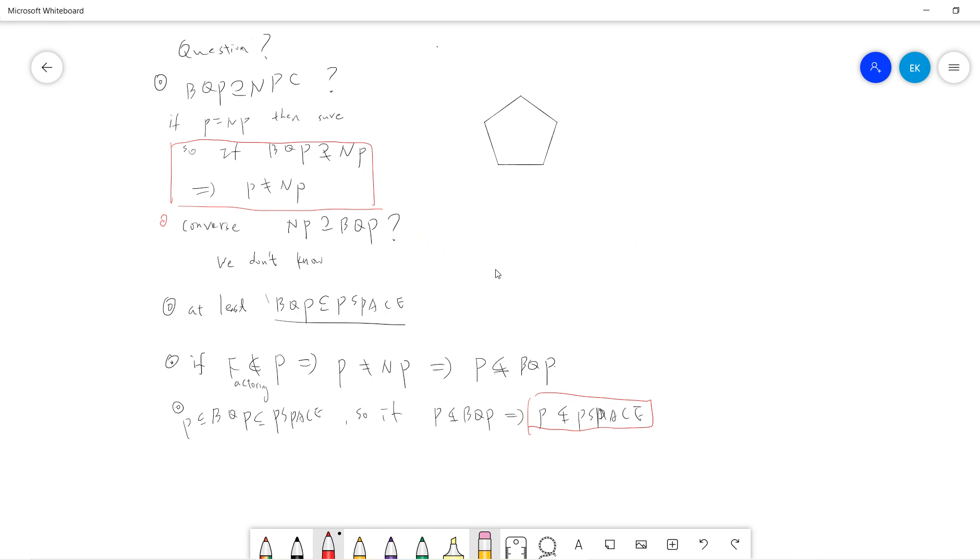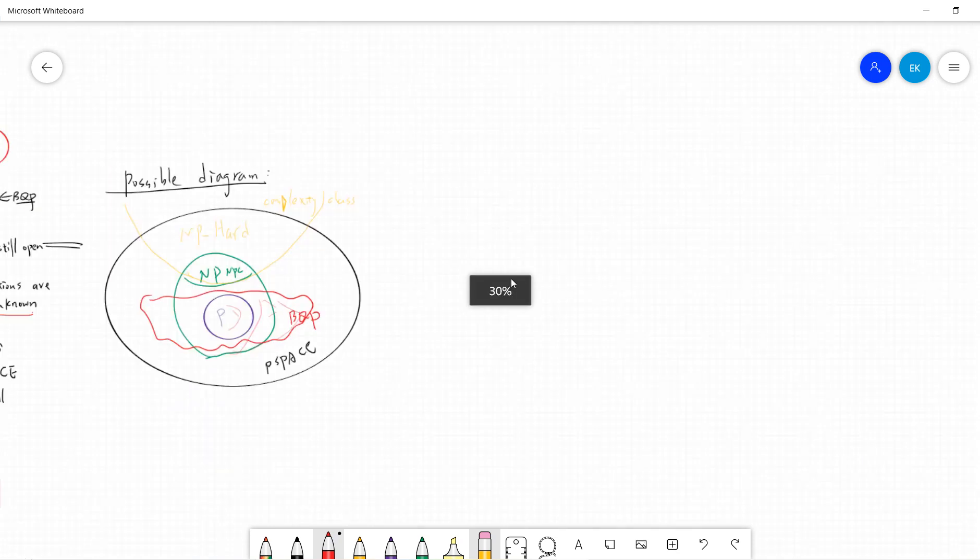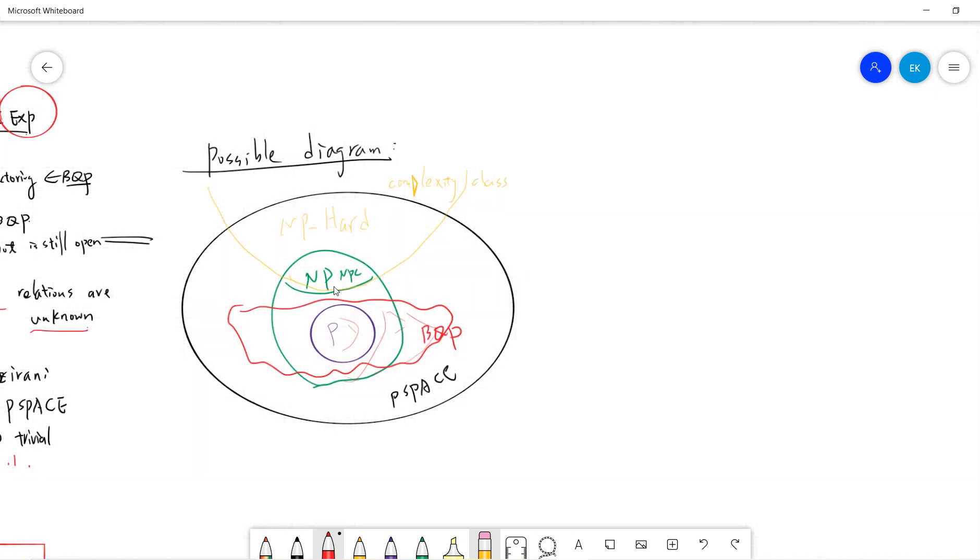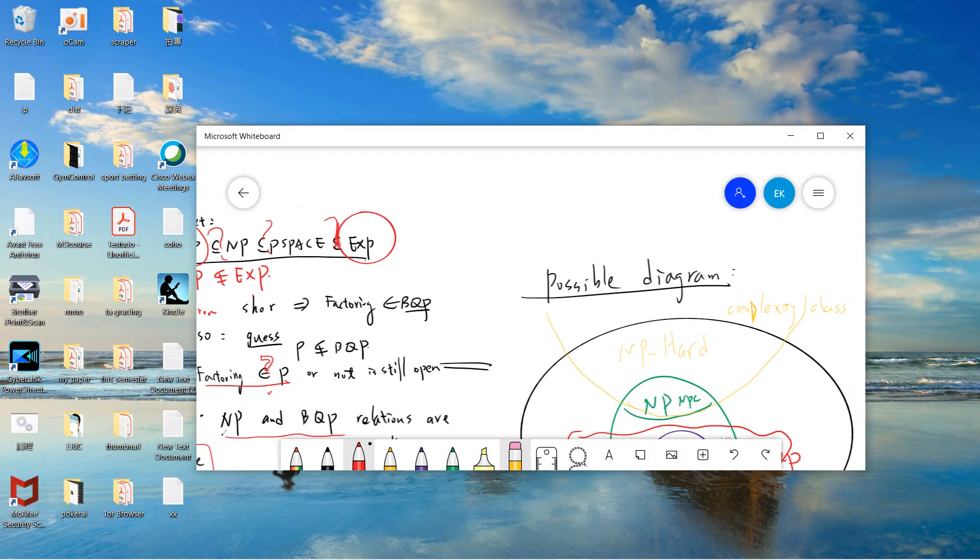That's why this is what most theoretical computer scientists believe is the actual possible complexity diagram. Although no one can prove anything. I will see you guys in the next video. Be sure to subscribe to my channel.